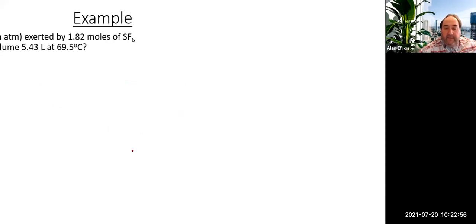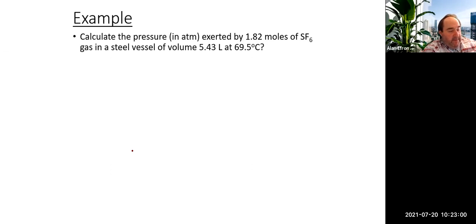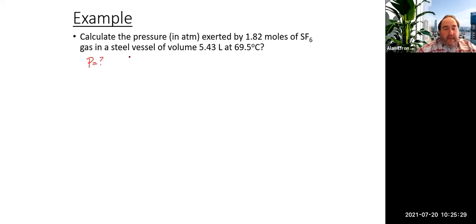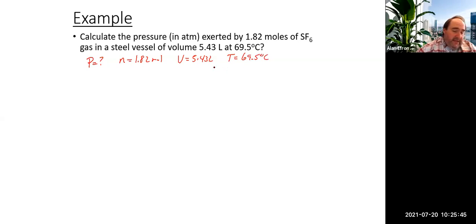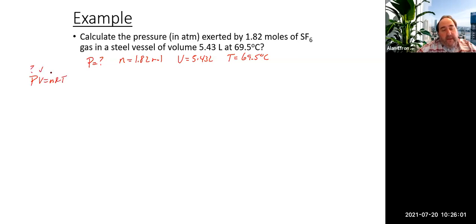Let's work through an ideal gas law example: find the pressure in atmospheres. We have 1.82 moles, a volume of 5.43 liters, and a temperature of 69.5 degrees Celsius. Laying out that information points clearly to the ideal gas law — there are no two pressures, temperatures, or volumes, so no previous gas laws apply. PV = nRT, solving for P.